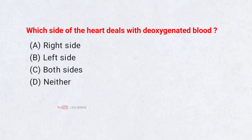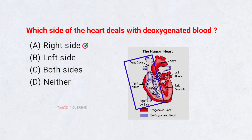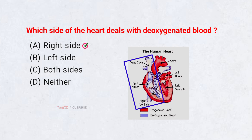Which side of the heart deals with deoxygenated blood? Correct answer A: Right side. The right atrium and ventricle handle deoxygenated blood and send it to the lungs.